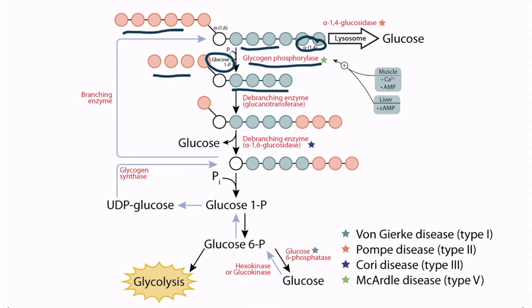These glycogen structures with four glucose residues remaining on a branch are sometimes referred to as limit dextrins. This results in four red molecules on the left side and four green molecules on the right side. Obviously the reaction must have occurred multiple times, liberating multiple molecules of glucose-1-phosphate. This figure is great for illustrating the limitations of glycogen phosphorylase.